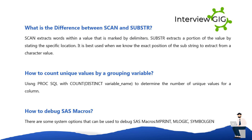How to count unique values by a grouping variable? Use PROC SQL with COUNT(DISTINCT variable_name) to determine the number of unique values for a column. How to debug SAS macros? There are some system options that can be used to debug SAS macros: MPRINT, MLOGIC, and SYMBOLGEN.